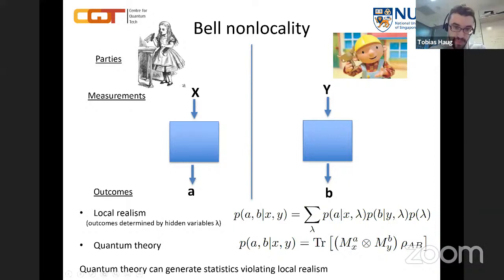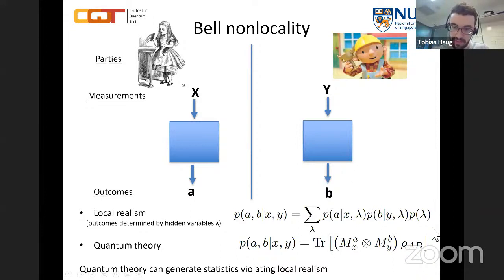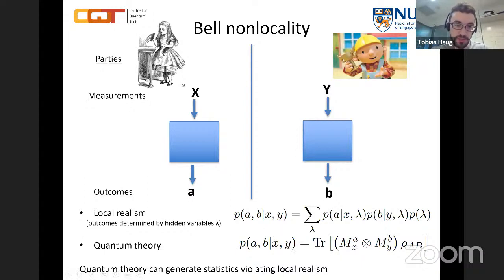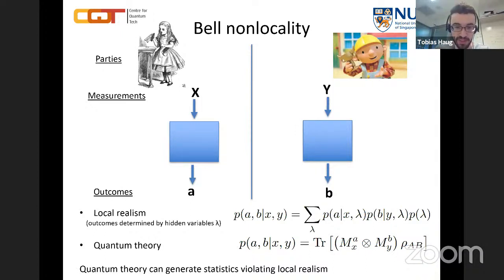If you assume the model is locally realistic — meaning the shared state is governed by some hidden variables determined beforehand — then the probability distributions you can generate are constrained. However, if you assume quantum theory, the measurements are POVMs and the shared state is a density matrix. It turns out quantum theory can generate statistics not possible in a local realistic model, violating local realism. The question in this field is: how do we find the correct probability distributions that demonstrate this violation?